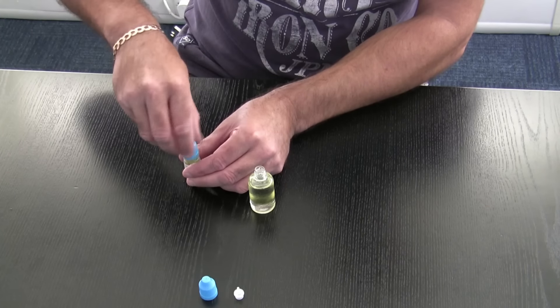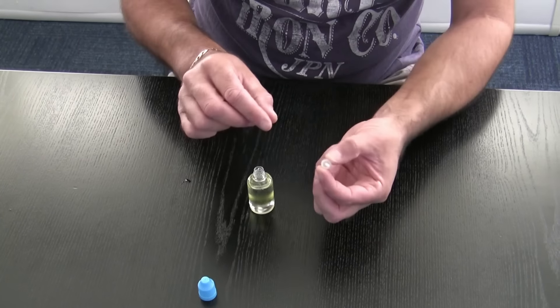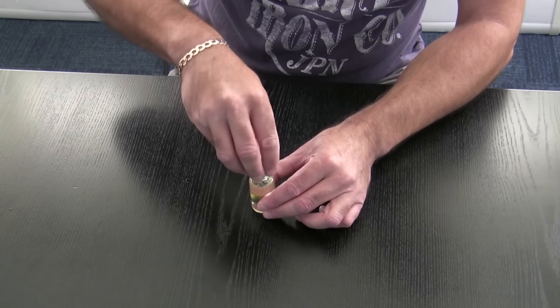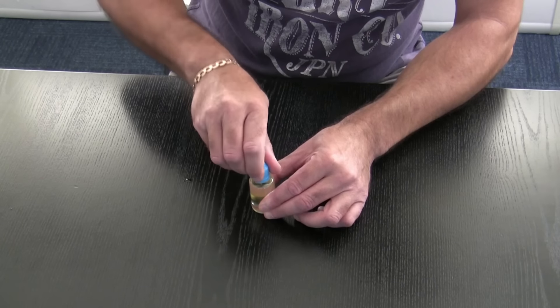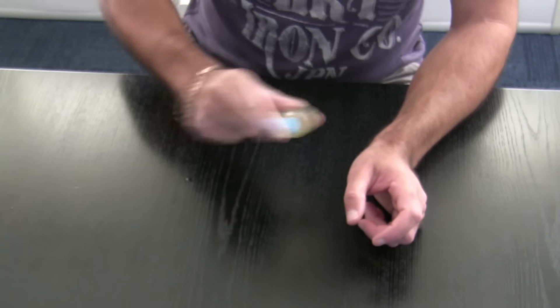That's it. Pop the lid on that, nicely out the way. Put your little dripper-tipper in there. Pop the lid on it. Give it a bit of a shake just to get it all nice and mixed up.